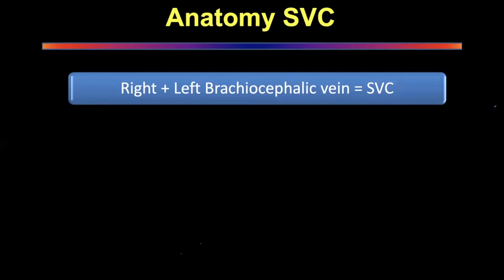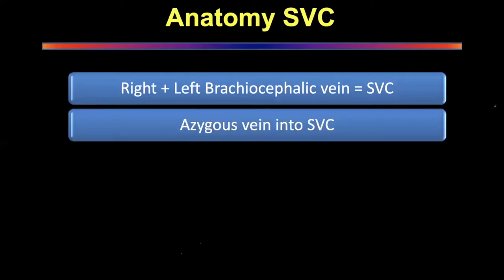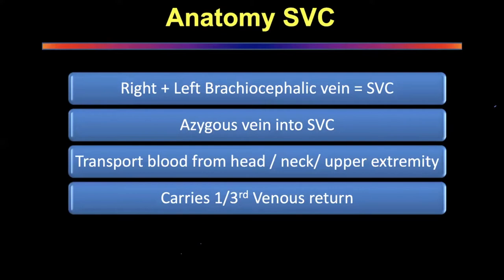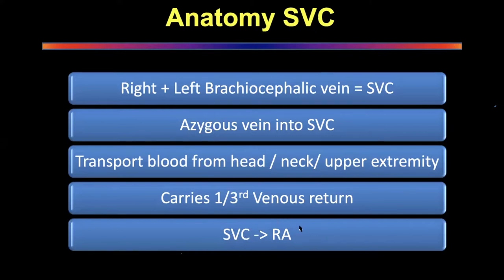The azygous vein is the only real structure that drains directly into the SVC. On the right side it comes across and drains into the SVC just before it enters the right atrium. The main function of the SVC is to transport blood from the head, neck, and upper extremities. Importantly, it carries almost one-third of the venous return — from very critical areas, mainly the brain — so obstruction causes significant back pressure.